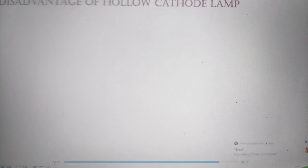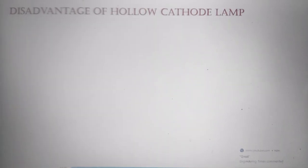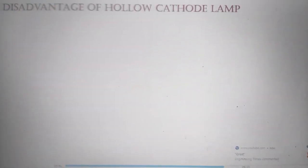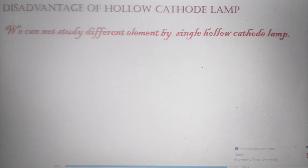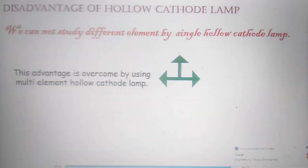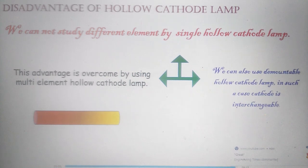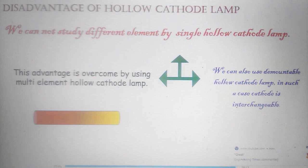A disadvantage of the hollow cathode lamp is that we cannot study different elements using a single hollow cathode lamp. This disadvantage is overcome by the multi-element hollow cathode lamp, in which the cathode consists of more than two elements. We can also use a demountable hollow cathode lamp, in which the cathode is interchangeable.